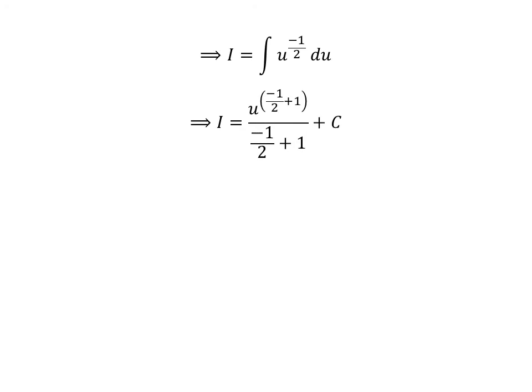This is a simple integration. The integration of u to the power minus half is u to the power minus half plus 1 upon minus half plus 1. So, i is equal to u to the power minus half plus 1 upon minus half plus 1 plus capital C. Capital C is the arbitrary constant of indefinite integral. Do not forget to add this constant in the end of any indefinite integral.